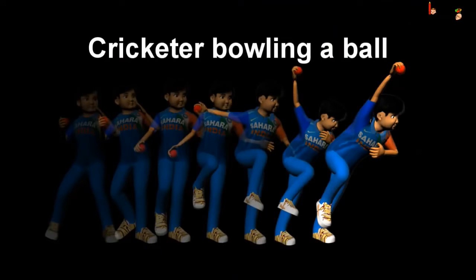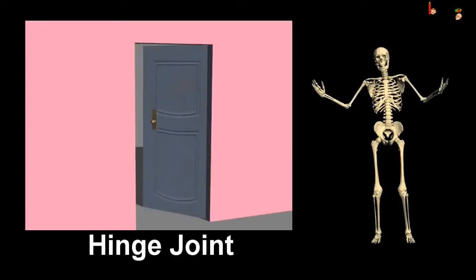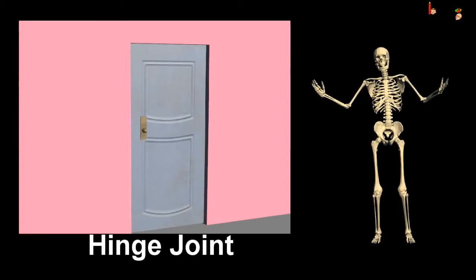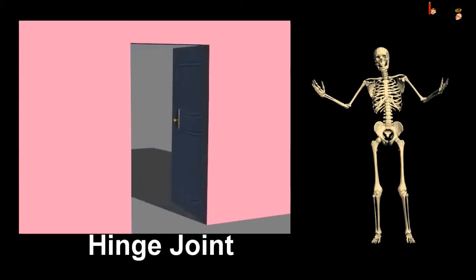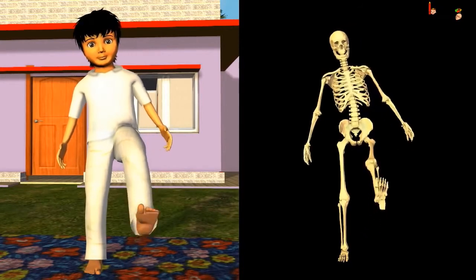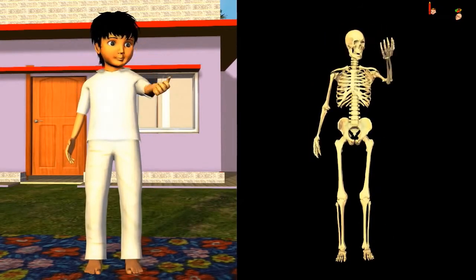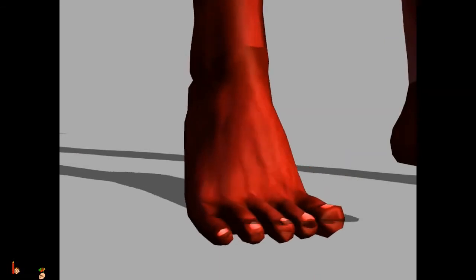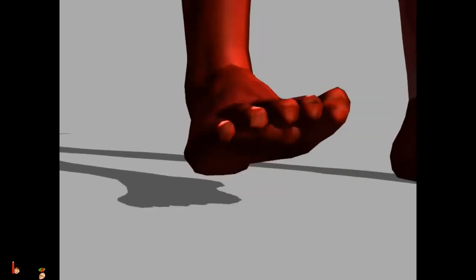You must have seen how the bowler in cricket bowls — he swings his hand freely around his shoulder and then finally throws the ball. The hinge joint works like a door on a hinge. It enables movement only in one direction.